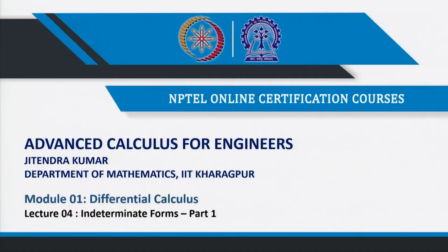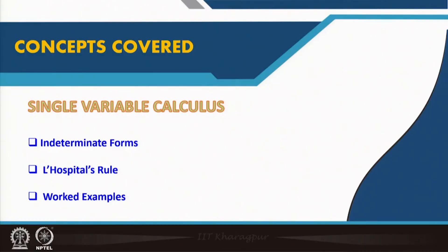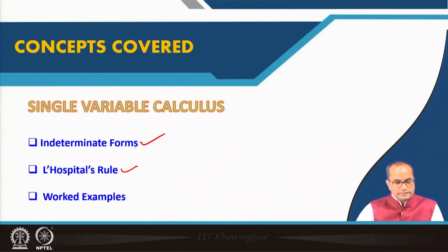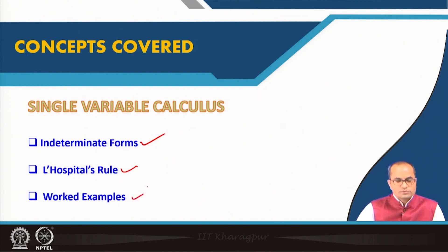This is lecture number 4 on Indeterminate Forms and this is Part 1. In this lecture, we will go through what are indeterminate forms and in particular, we will be talking about L'Hôpital's rule, which is very important to calculate certain limits, and then we will be going through some worked problems.